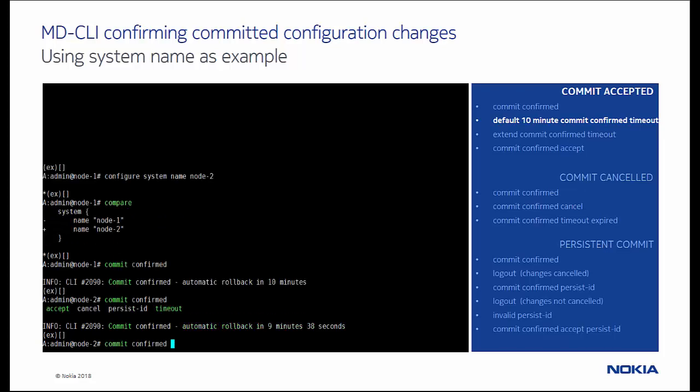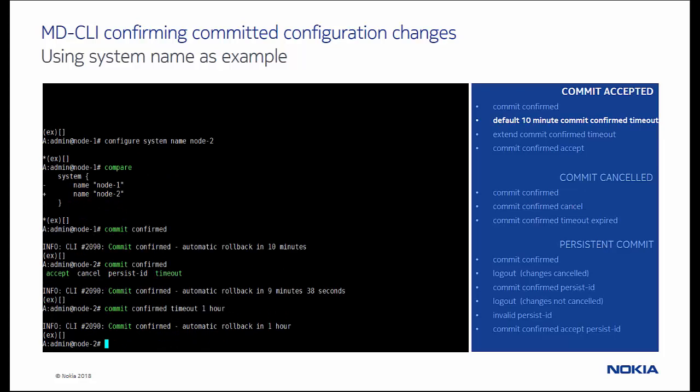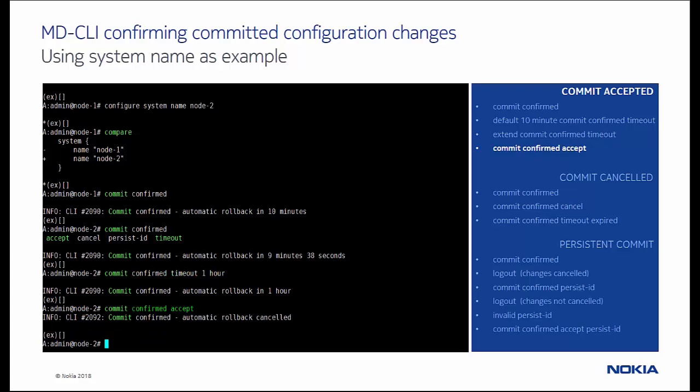While the commit confirmed timer is running, a follow-up commit confirmed command restarts the timer with a default or a specified value — 1 hour in this example. Next we make our changes permanent by using the commit confirmed accept command, and notice that the timer and automatic rollback are cancelled.